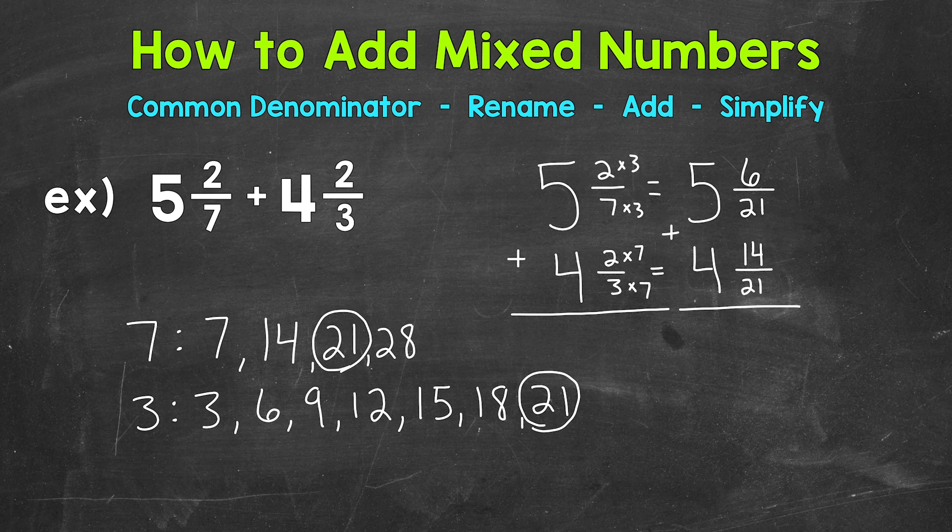So let's add our fractions and then whole numbers. So for our fractions, add the numerators. 6 plus 14 is 20. And then we keep our denominator of 21. So 6 twenty-firsts plus 14 twenty-firsts equals 20 twenty-firsts. So we added our fractions.